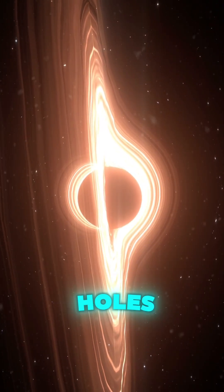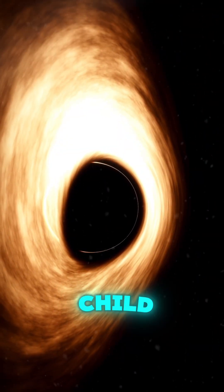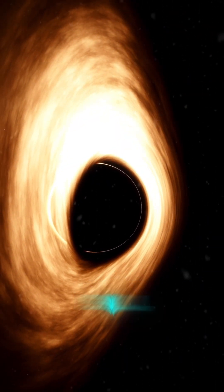However, there are intermediate mass black holes, which might be thousands to hundreds of thousands of solar masses. They're like the middle child of black holes, not too big, not too small.